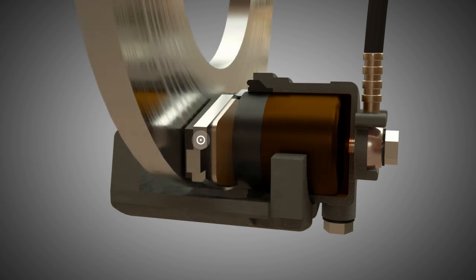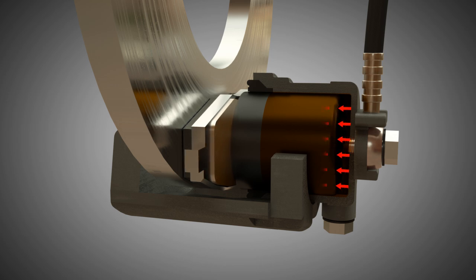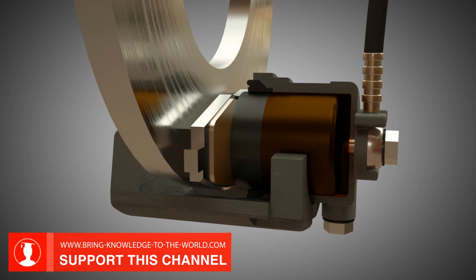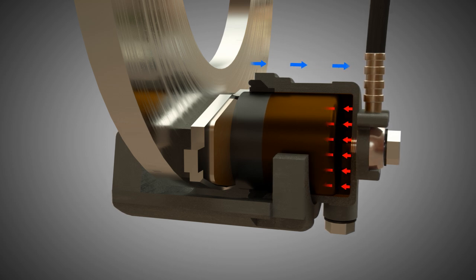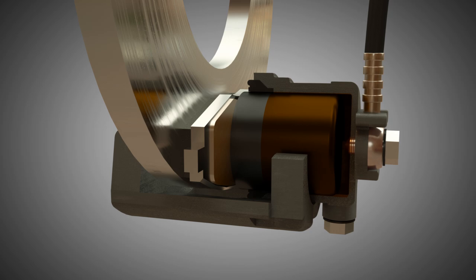First, the caliper piston presses the brake pad against the brake disc. Since the brake disc is fixed, the brake pad and caliper piston cannot be moved any further. If pressure continues to be applied to the caliper piston, the entire caliper must slide backwards. Without pressure, the caliper and caliper piston return to their initial position.